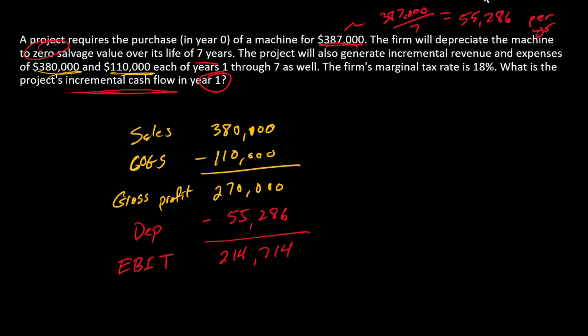We call this earnings before interest and taxes or EBIT. Next step is going to be to calculate taxes. And taxes is going to be the tax rate of 18% times EBIT. So subtracting taxes here, we have $214,714 times 0.18. That's going to be a reduction of $38,649.